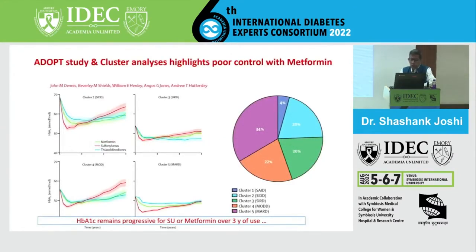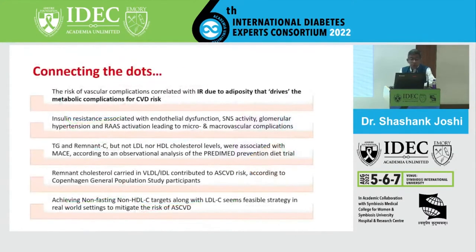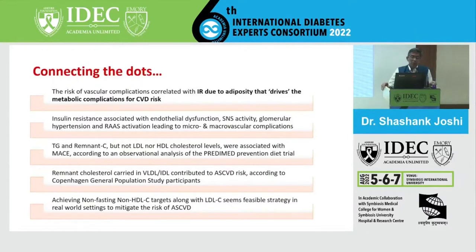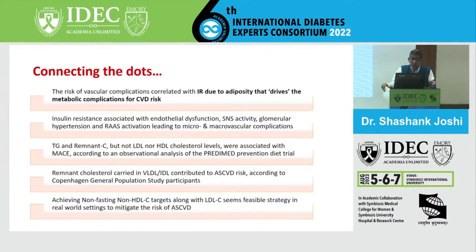We have the ADAPT data to show with cluster analysis that we need tight glucose control - we need to connect the dots. Vascular complications with insulin resistance due to adiposity drive the metabolic complications of cardiovascular risk. Insulin resistance leads to endothelial dysfunction, excess sympathetic nervous system activity, glomerular hypertension, and renin-angiotensin activation, leading to micro and macrovascular complications.